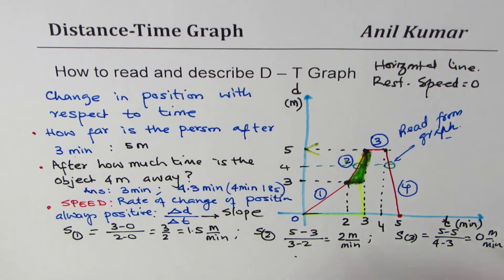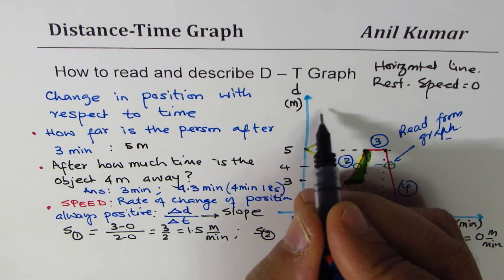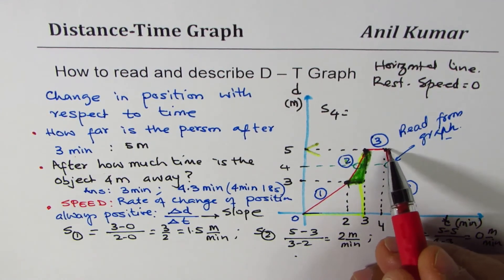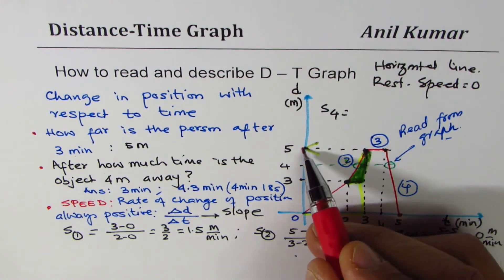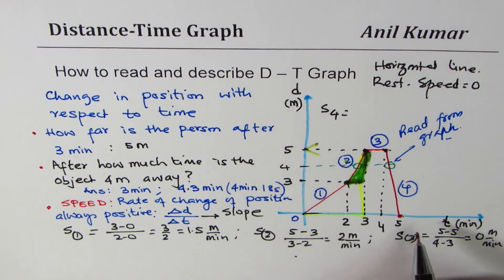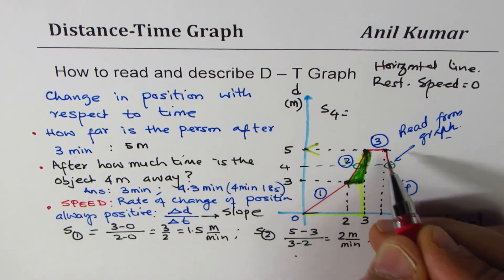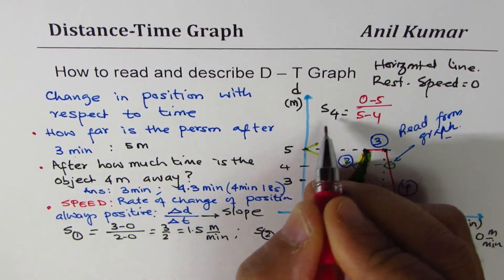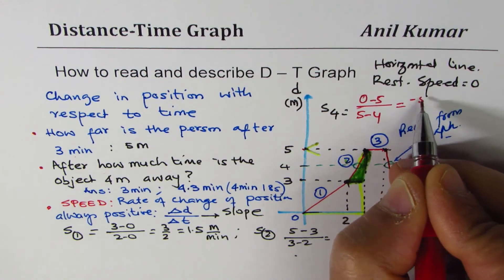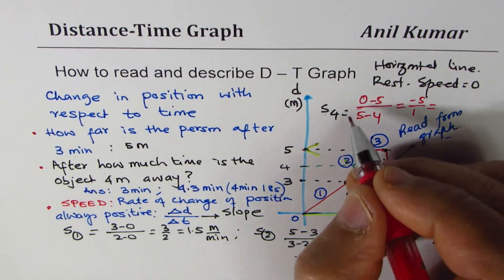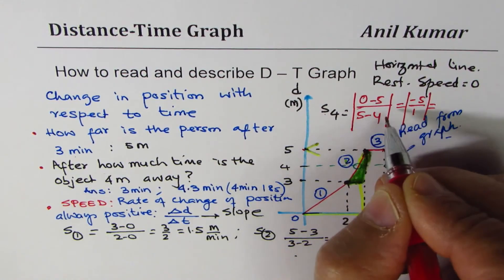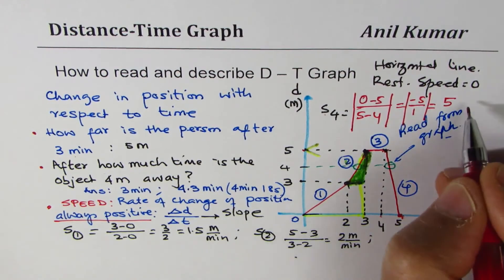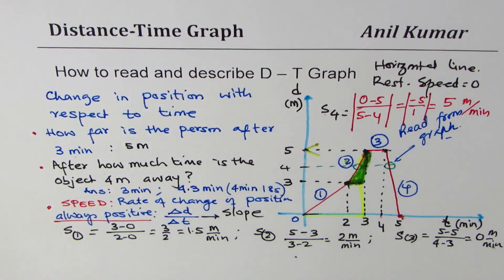For leg four — the return — the distance changes from 5 to 0. Speed is always positive, so we take the absolute value: |0 − 5| / (5 − 4) = 5/1 = 5 meters per minute. Even though the change in distance is negative, speed is always written as a positive value — so it's 5 meters per minute, the highest speed in the graph.